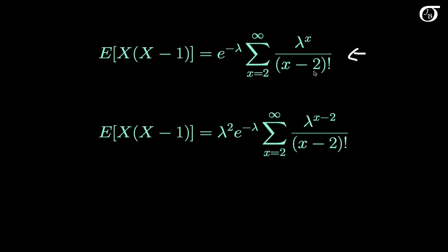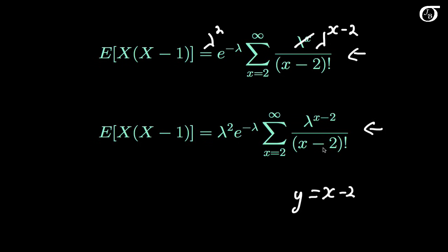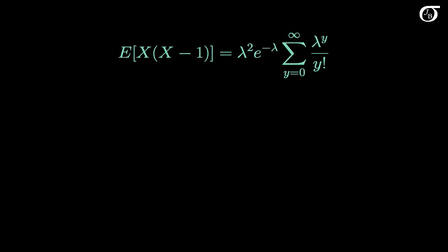Since we have x minus 2 factorial in the denominator, we'd like lambda raised to the x minus 2 in the numerator so we can use the series expansion of e again. So I'm going to take a lambda squared out front and change this to lambda raised to the x minus 2. I'm going to let y equal x minus 2, giving a y factorial in the denominator and lambda to the y in the numerator, and the lower limit changes from x equals 2 to y equals 0. This summation is exactly the series expansion of e to the lambda.